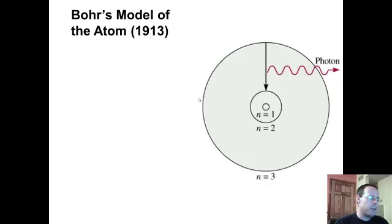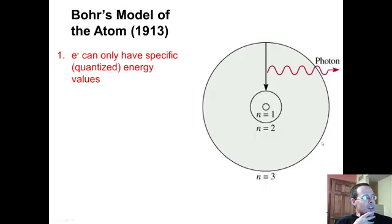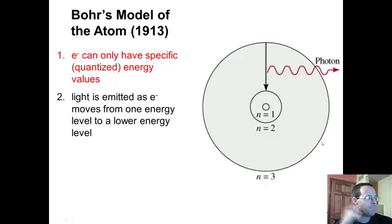Bohr came up with this model of the atom. It's after Plum Pudding, it's after Rutherford's model, and it's kind of known as the planetary model. You kind of have the sun in the middle and then you have these energy levels that are at certain distances from our sun or from our nucleus. What he said was electrons can only have specific or quantized energy values. He got that from Planck's work in 1900. Light is emitted as electrons move from one energy level to a lower energy level. If we have an electron that starts down here and gets jumped up to this energy level, it is what's really known as an excited state. Does it stay there? No, it does not. Eventually that electron's going to fall back down.